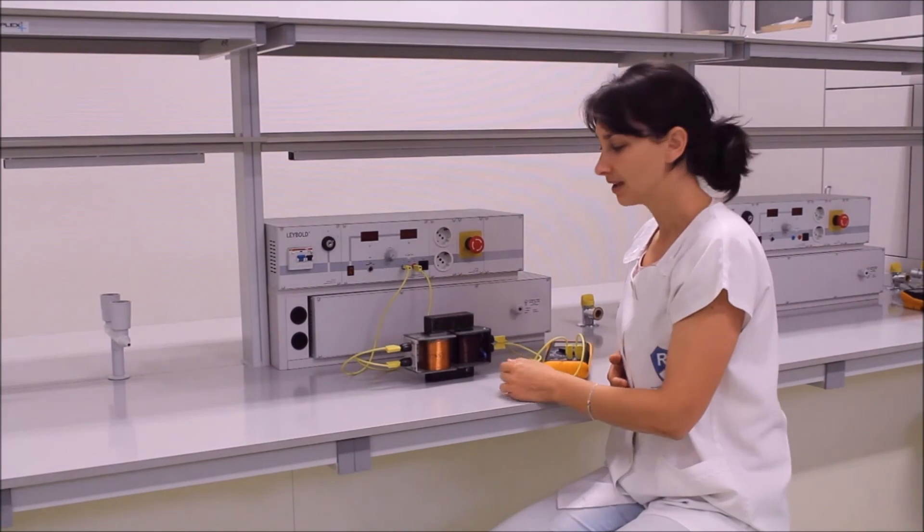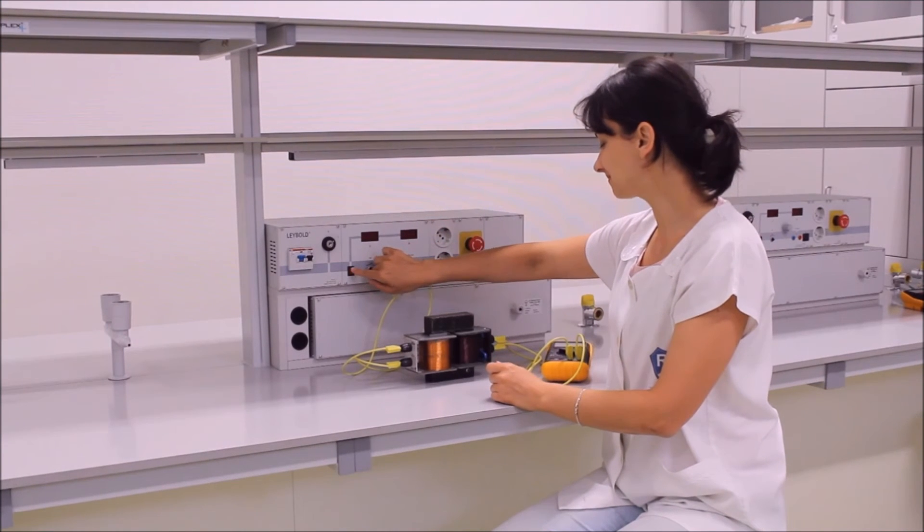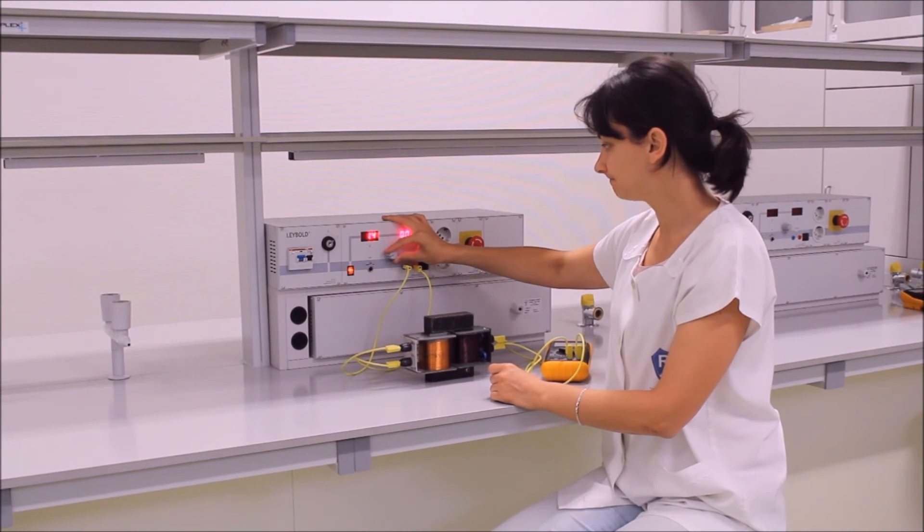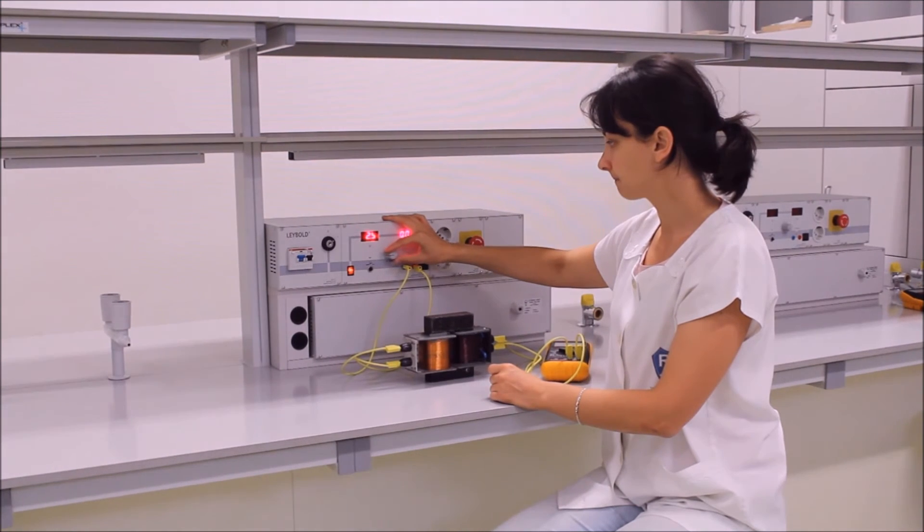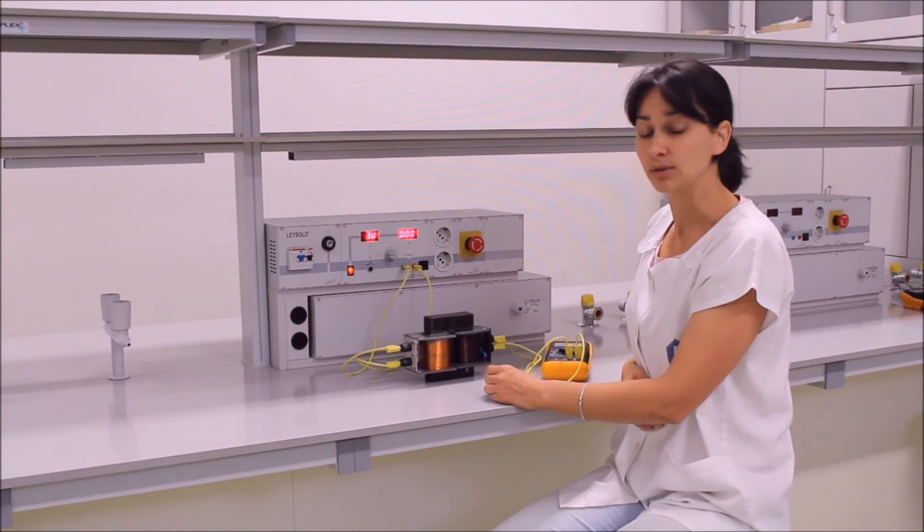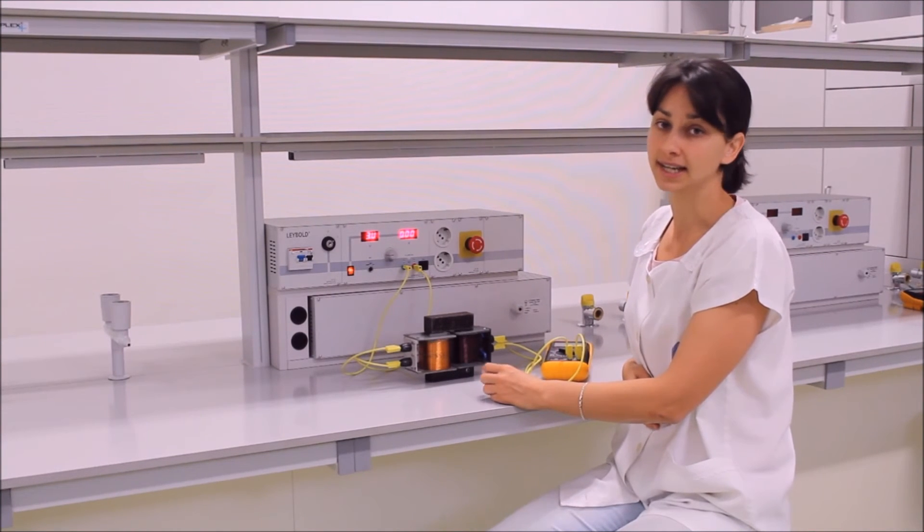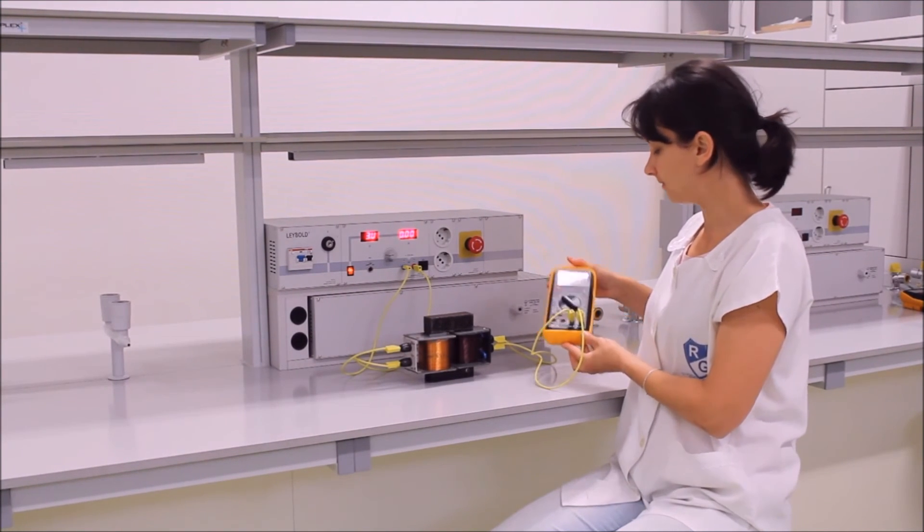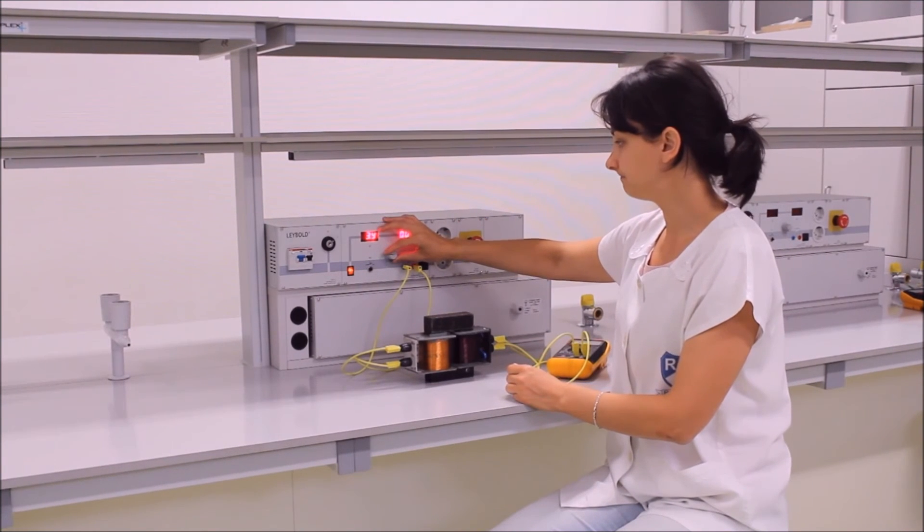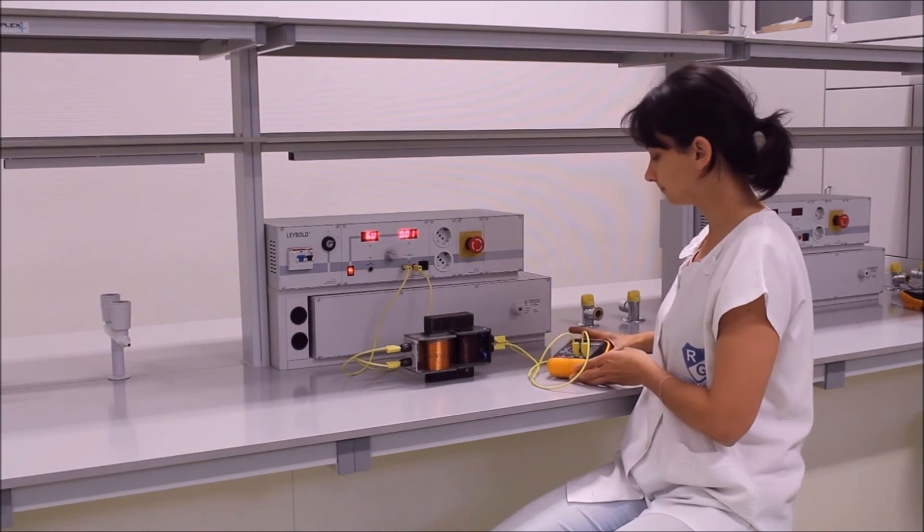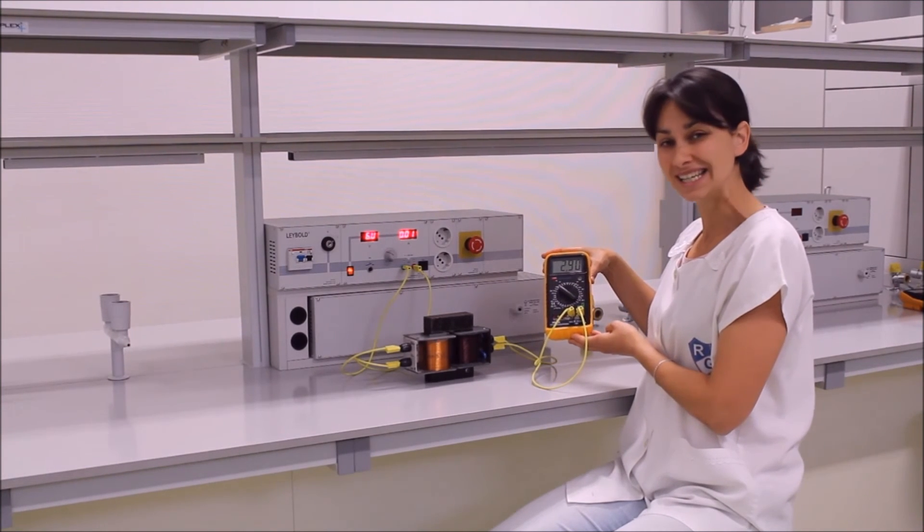Kapcsoljuk a feszültséget a 600 menetes tekercsnek. Megpróbálunk közel 3 voltot beállítani ismét. Ekkor az alábbi megállapításunk szerint a szekunder tekercsen közel 1,5 volt feszültséget kell mérni. 1,46 voltot mutat a mérőműszer. Nézzük 6 volt esetén. Ekkor közel 3 voltot várunk. 2,9 volt.